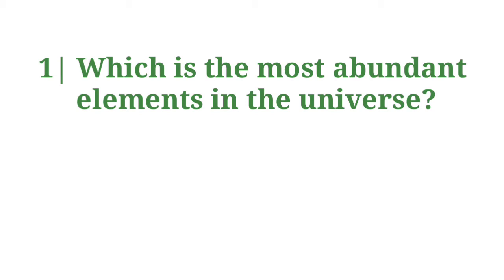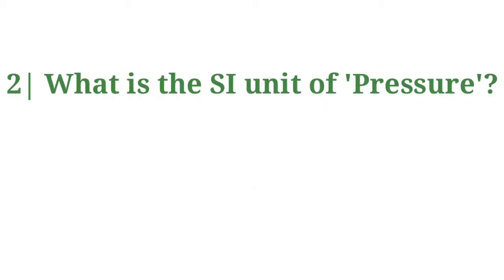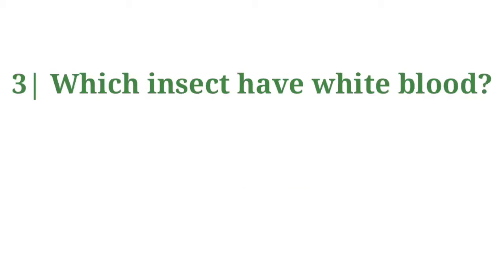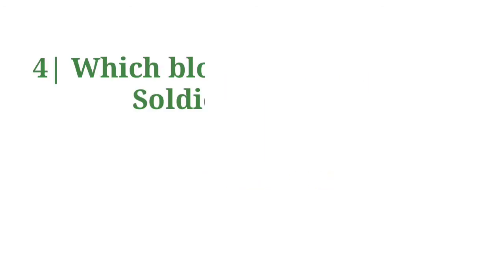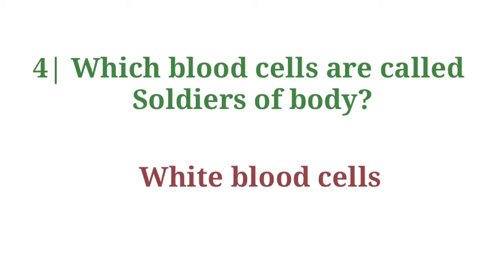Which is the most abundant element in the universe? Answer: Hydrogen. What is the SI unit of pressure? Answer: Pascal. Which insects have white blood? Answer: Cockroach. Which blood cells are called soldiers of the body? Answer: White blood cells.